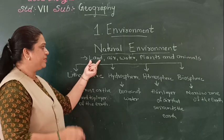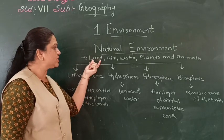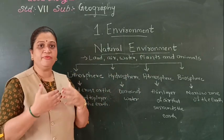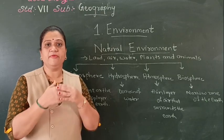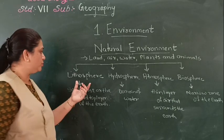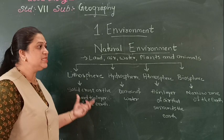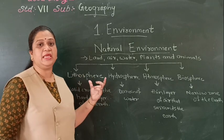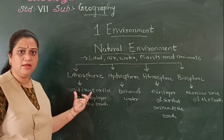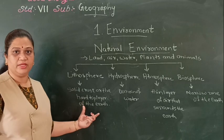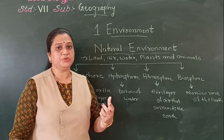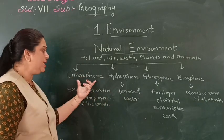The land component of the natural environment comes in the lithosphere. We live on the earth's surface, which means human beings are found on the lithosphere. Plant and animal life is also found on the lithosphere. The major landforms like mountains, rivers, plateaus and plains are all found in this sphere.